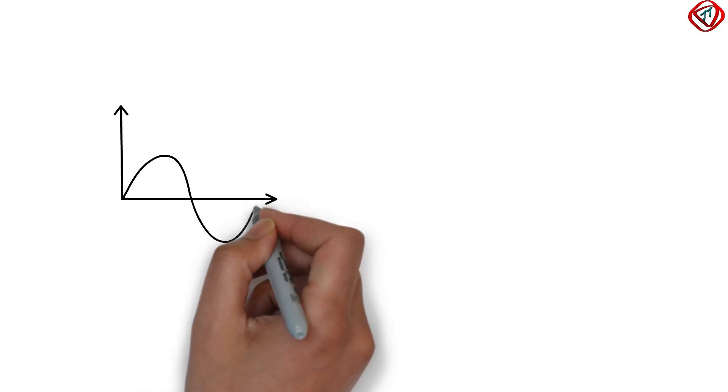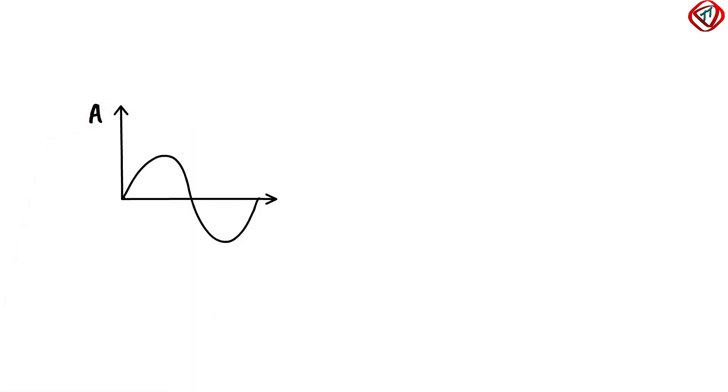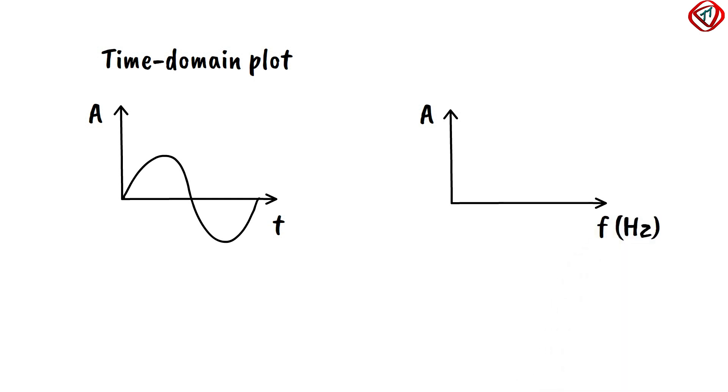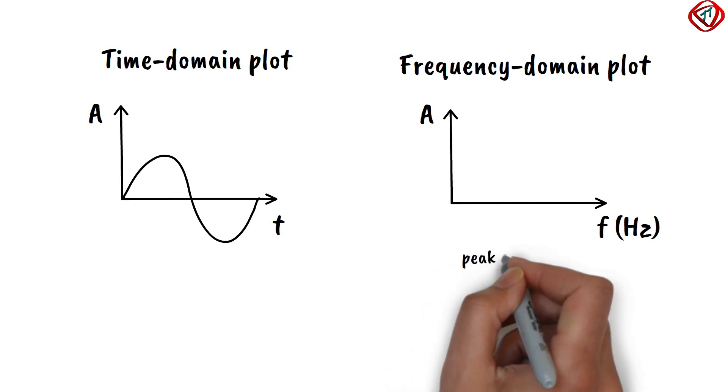Till now, we have shown a simple sine wave as the variation of amplitude with respect to time. It is called time domain plot. To show the relationship between the amplitude and the frequency of a signal, we use frequency domain plot. It is focused only on the peak amplitude and the frequency of the signal.